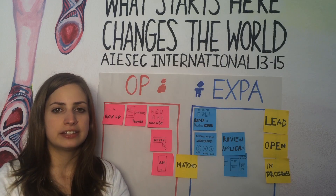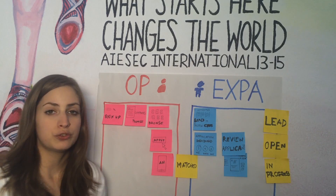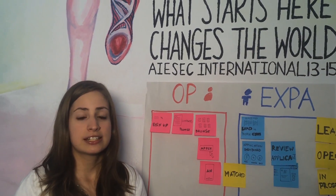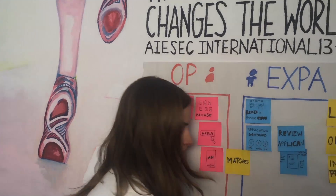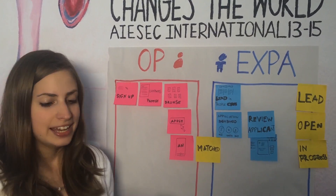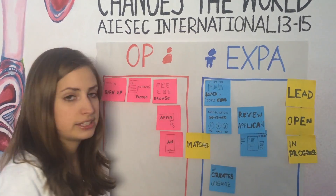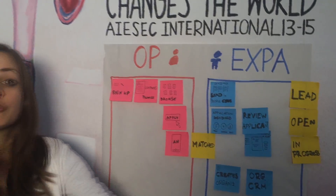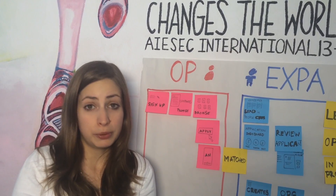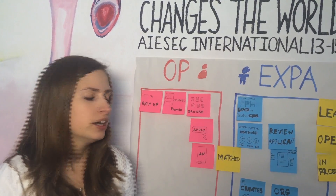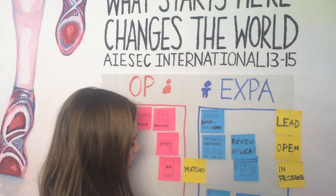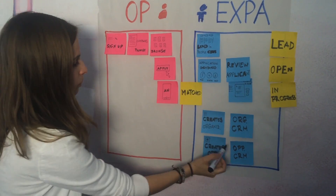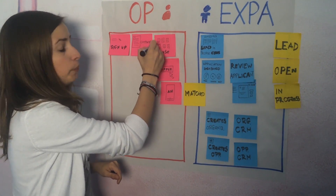What happens when we are creating an organization and an opportunity? First, a person goes to sales meetings and starts conversations and negotiations with an organization. Once they think something will come out of these negotiations, they create the organization in the system and this will appear on the Organization CRM. Once negotiations go further and the organization wants to create an opportunity — meaning they would like to have one or more EPs — the TN manager creates an opportunity, which will appear in the Opportunity CRM but more importantly it will also become part of the Opportunities Portal.